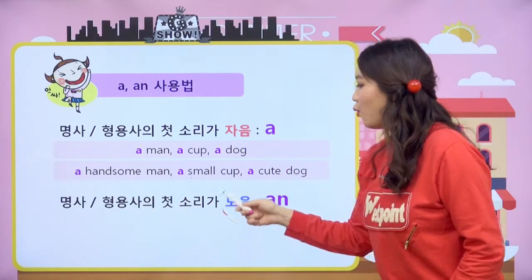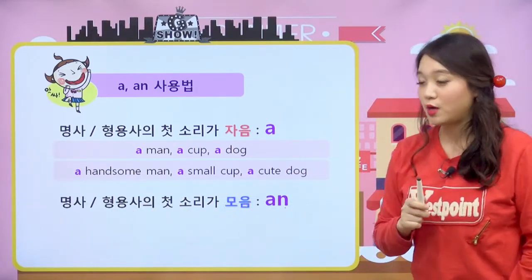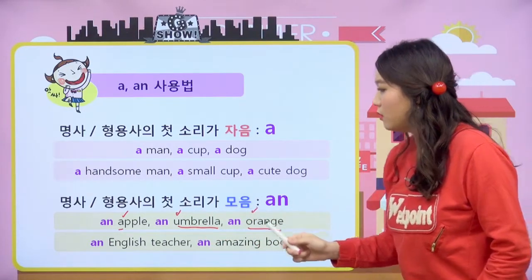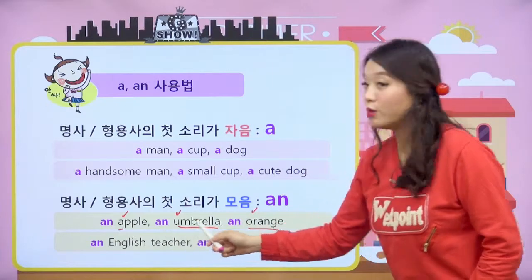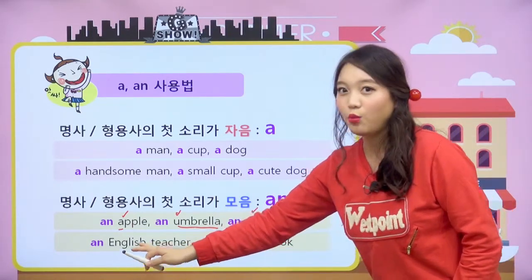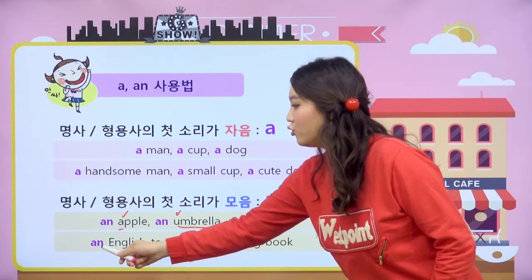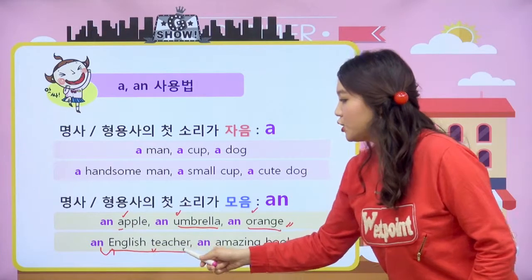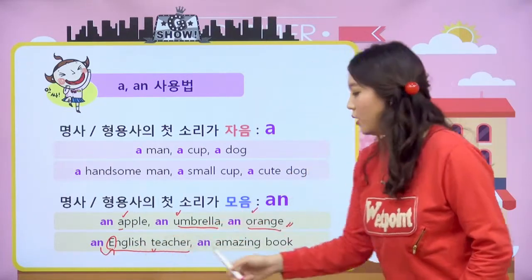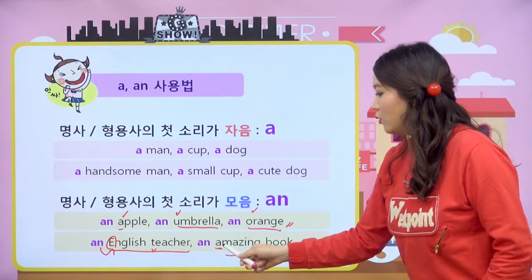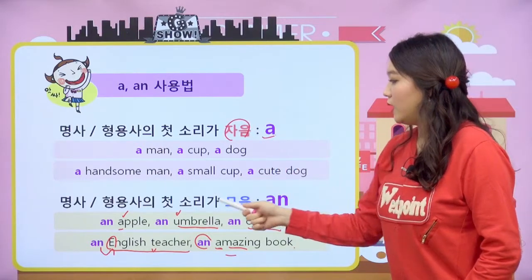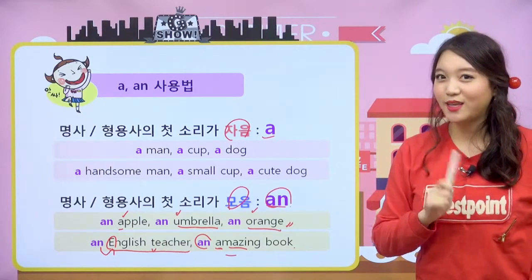명사와 형용사의 첫 소리가 모음일 경우에는 an이 온다고 했어요. 예를 들면 apple, umbrella, orange — 모두 모음이죠. 그래서 an apple, an umbrella, an orange 이렇게 되고요. 형용사가 오게 되면 바로 뒤에 있는 걸 보면 된다고 했어요. an English teacher, an amazing book 이렇게 됩니다. 자음일 때는 a, 모음일 때는 an이 온다 이렇게 기억을 하시면 됩니다.